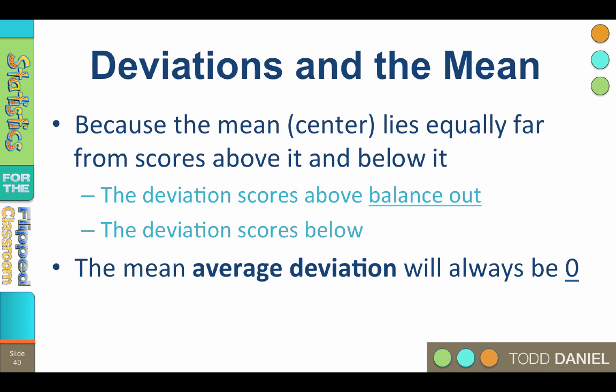So because the mean or the center lies equally far from the scores above it and below it, the deviation scores above the mean balance out the deviation scores below the mean.